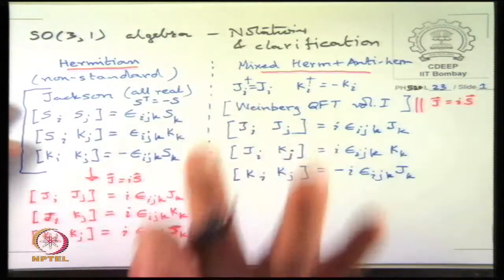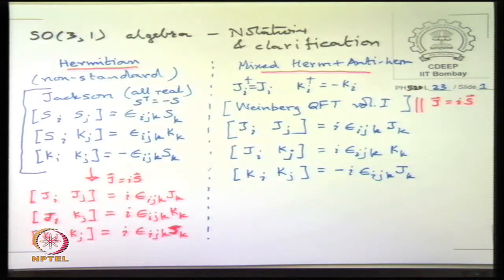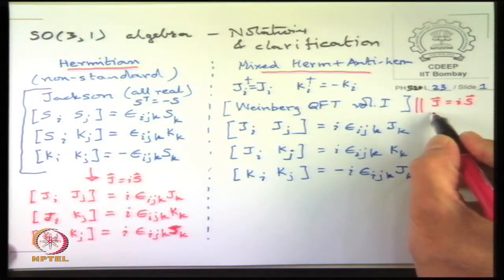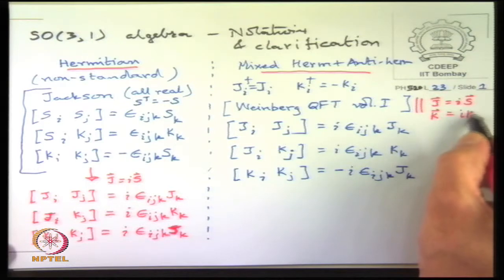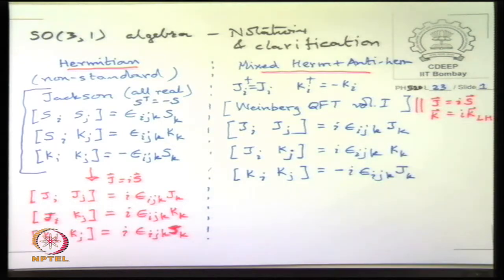Jackson uses everything real, so at least that is very simple to follow — the real matrices are multiplied out with nothing left to imagination. You can check everything, and also make K_new equal to i times K_Jackson.